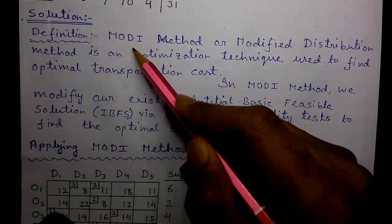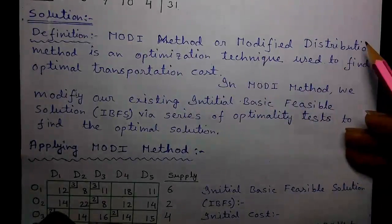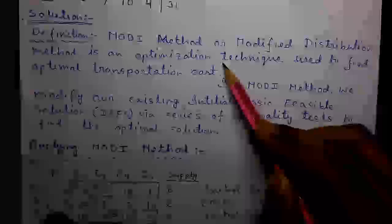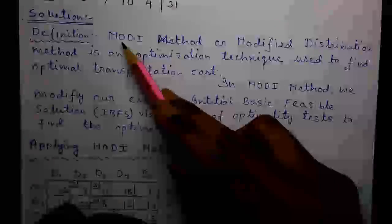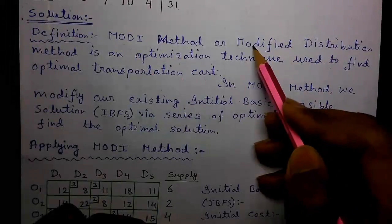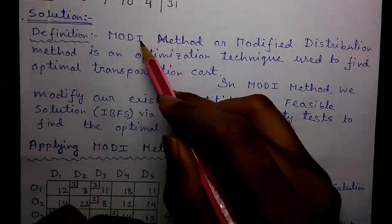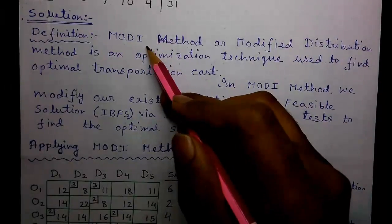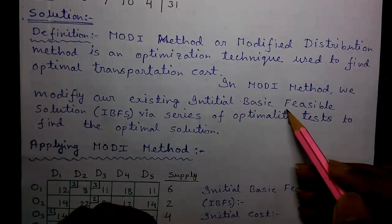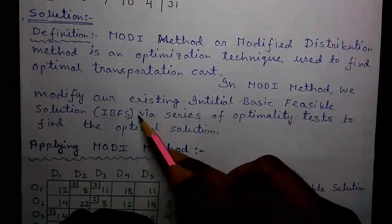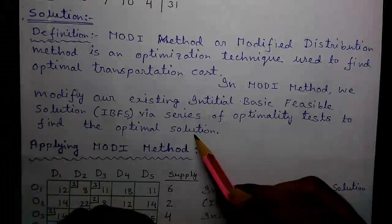The definition of the MODI method. The MODI method or the modified distribution method is an optimization technique used to find the optimal transportation cost. MODI is a short form of modified distribution. MO from modified and DI from distribution. So in MODI method, we modify our existing initial basic feasible solution or IBFS via a series of optimality tests to find the optimal solution.